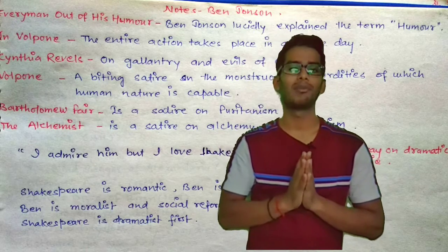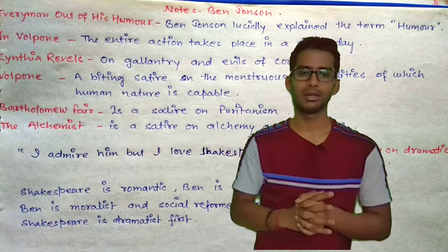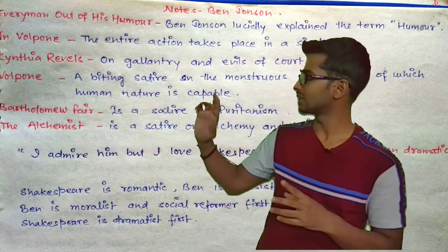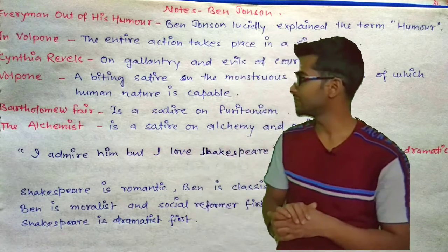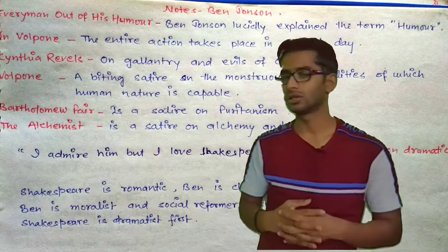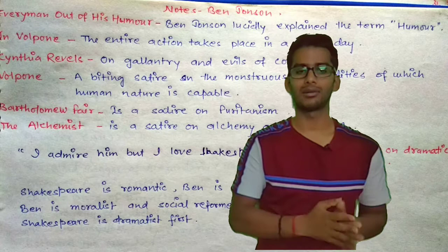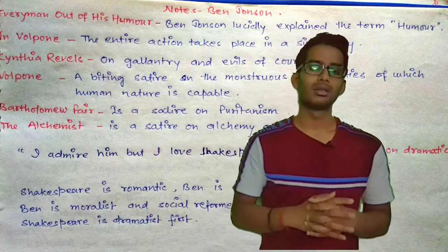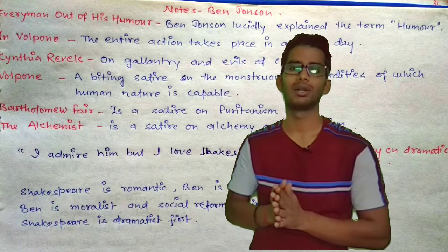Volpone, or The Fox, is a biting satire on the absurdities of which human nature is capable. Bartholomew Fair is a satire on Puritanism. The Alchemist is a satire on alchemy. It can be asked in an exam: which satire is on alchemy? — The Alchemist. Which is on Puritanism? — Bartholomew Fair. These short notes will help you identify the right answers.